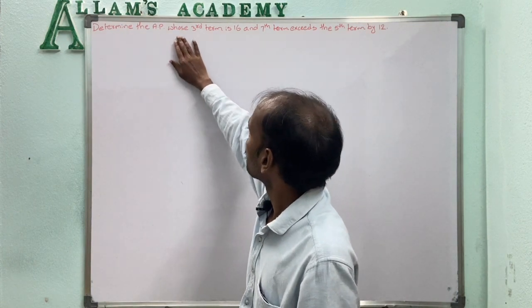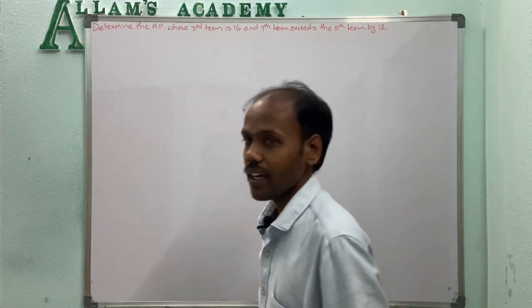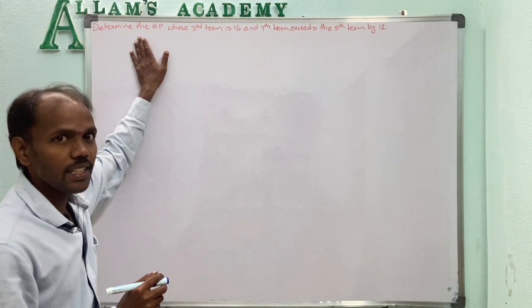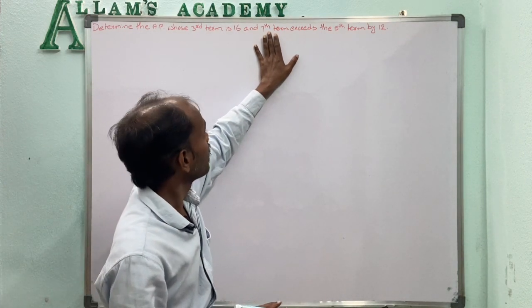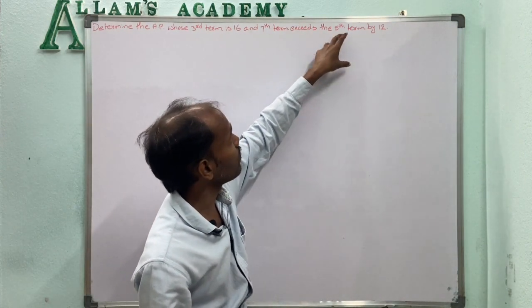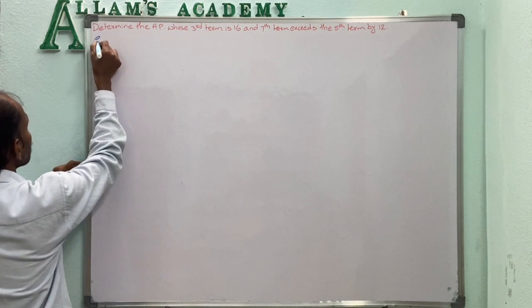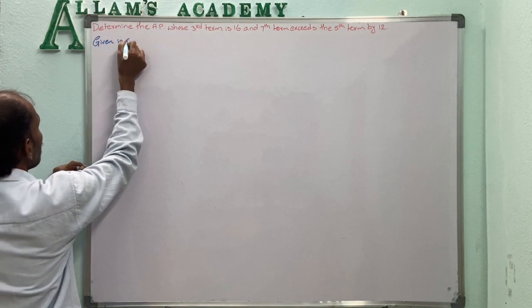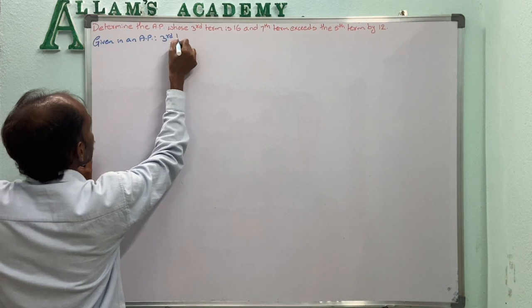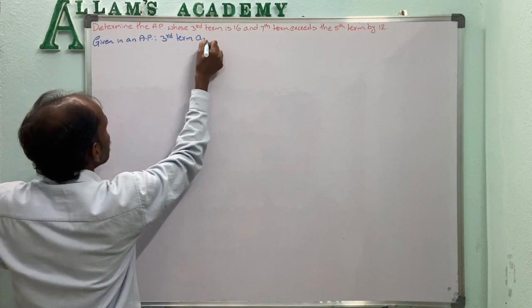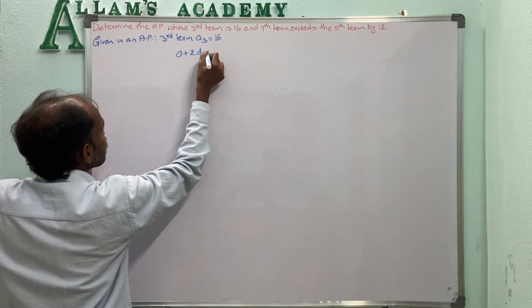Problem: Determine the AP whose third term is 16 and 7th term exceeds the 5th term by 12. The 3rd term is given as 16, so A3 = A + 2D = 16.